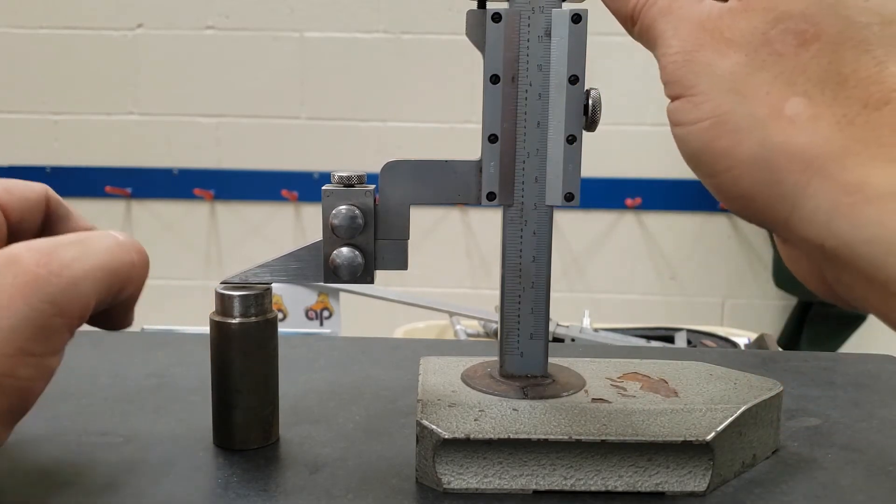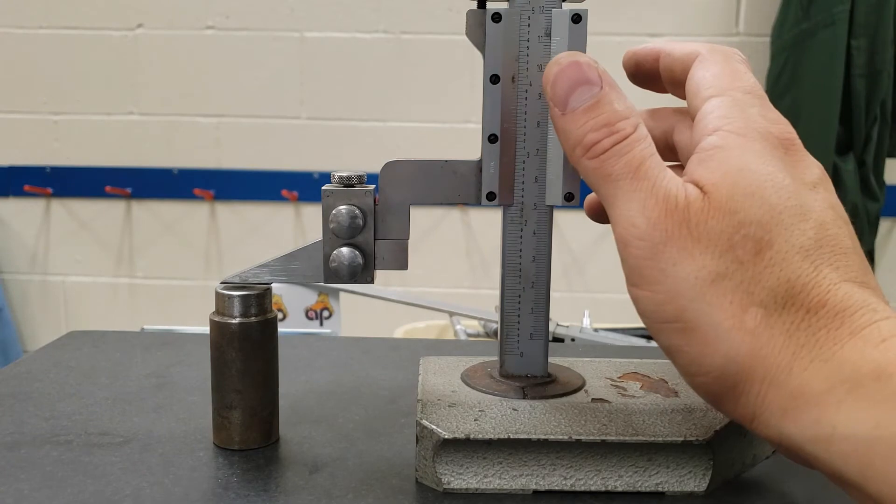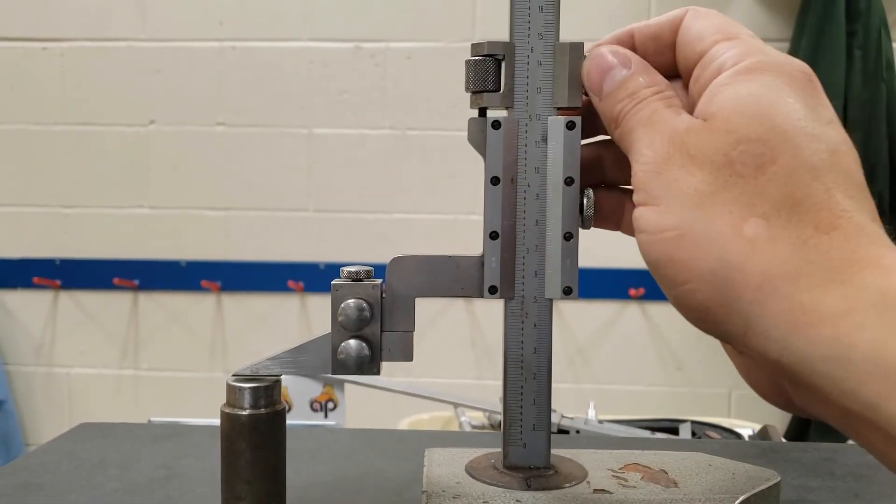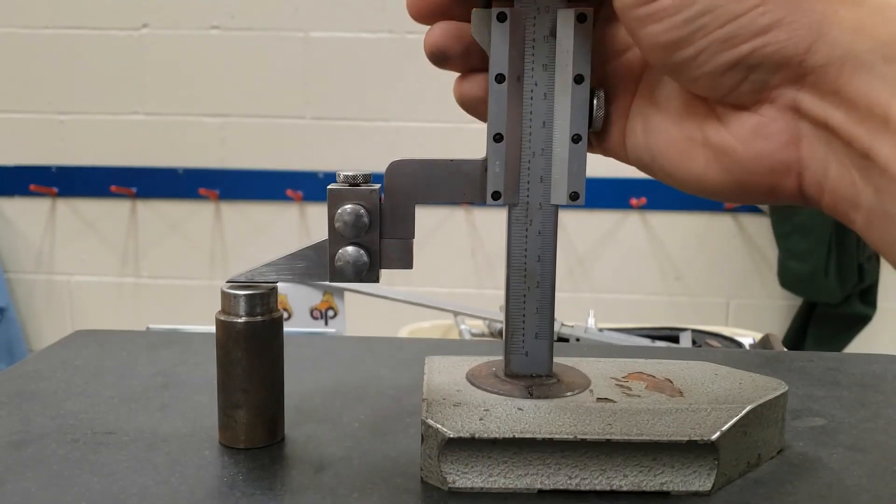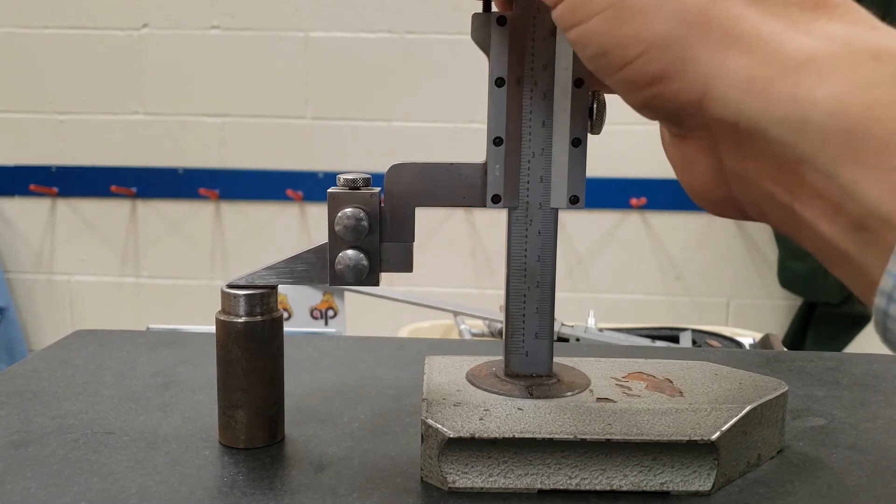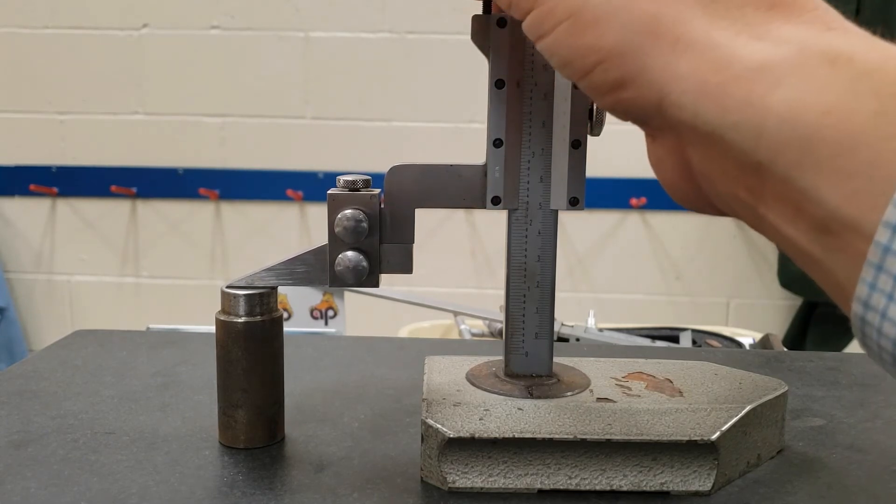Lock the upper screw and then use the fine adjust to bring it down until it just touches.